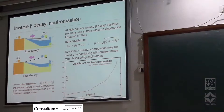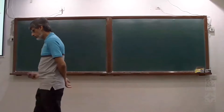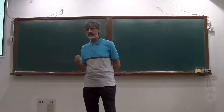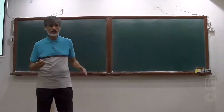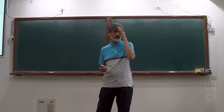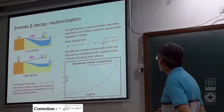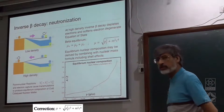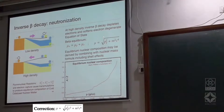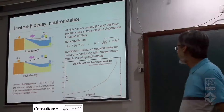Free electrons throughout the star move around, scattering from one nucleon to another. In the upper part of the crust, the nuclei will be in a lattice-like, crystal-like structure — just like in metals. You have the conduction band and electrons mostly in the conduction band, so they can move through the entire region.